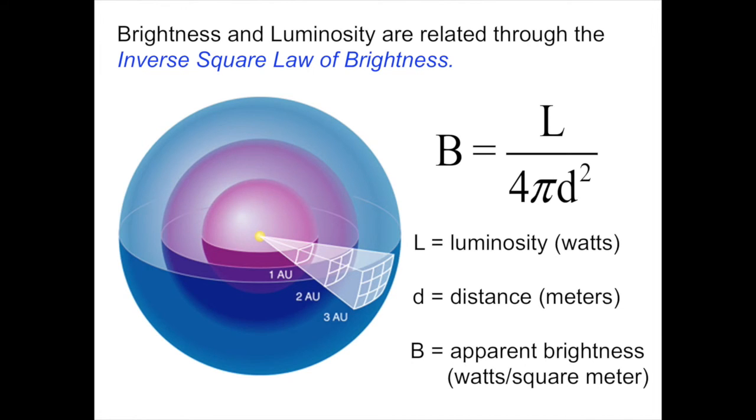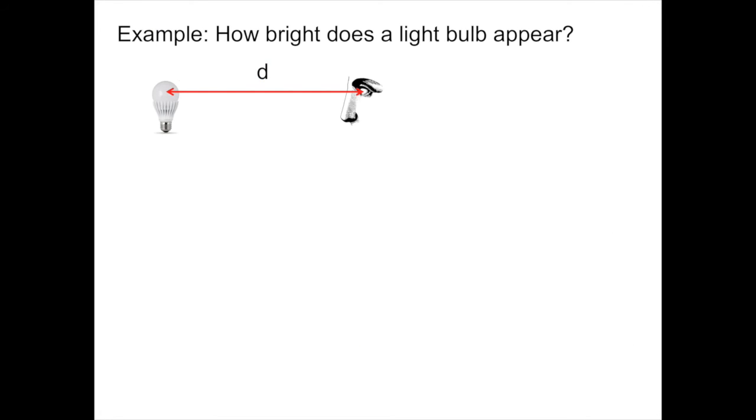Let's give an example of how the inverse square law of brightness works for a simple light source. For example, how bright does this light bulb appear to be? I've got my little 10 watt light bulb here from the previous slide, and I'm sitting some distance d away. And I ask this classical statue here, hey classical statue, how bright is that light bulb? Classical statue says, hmm, it's B.